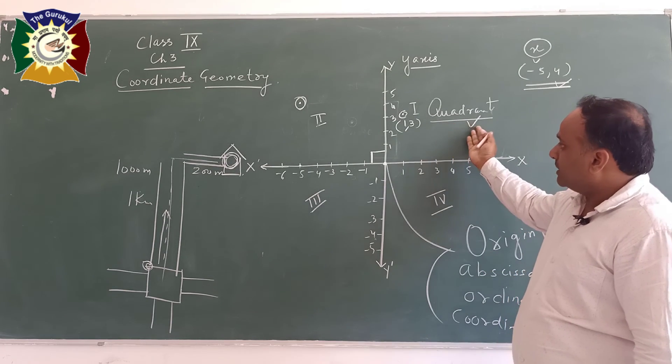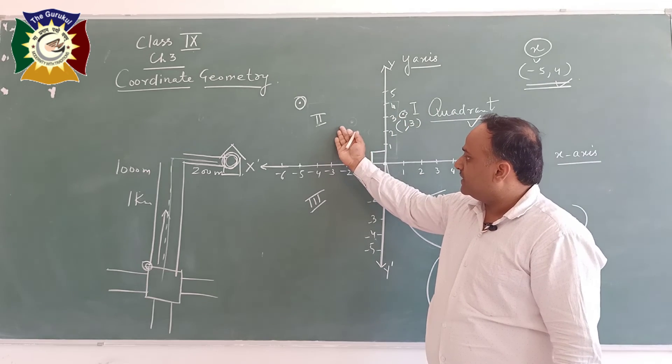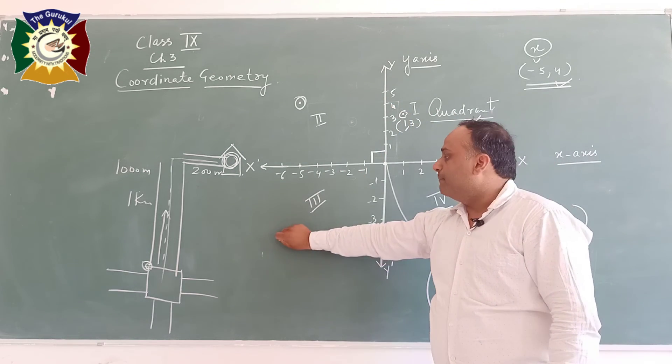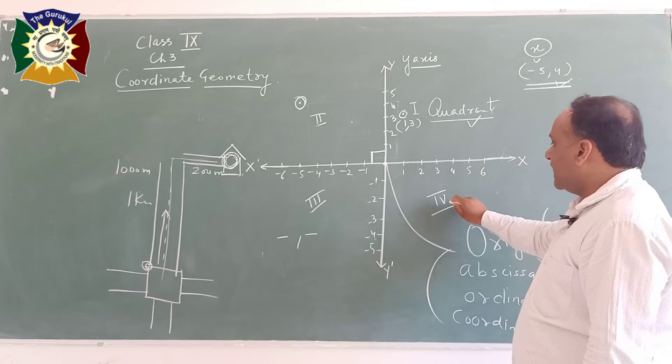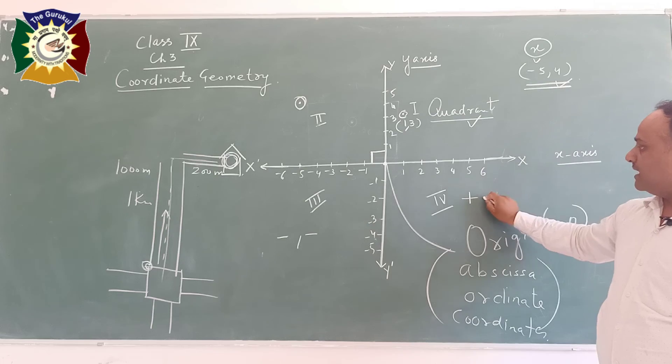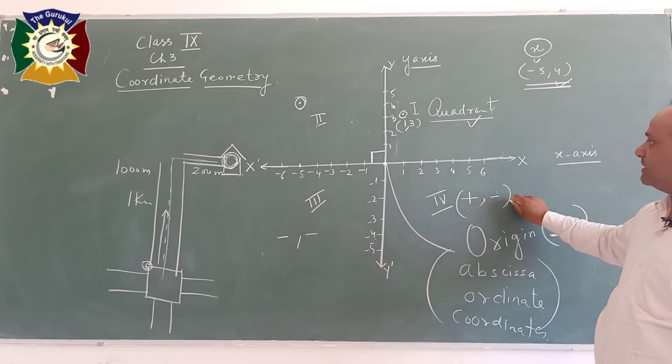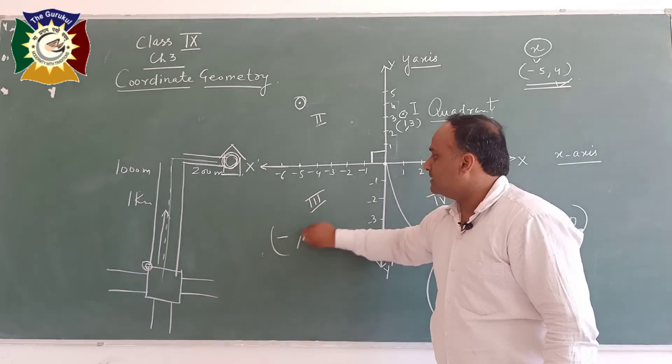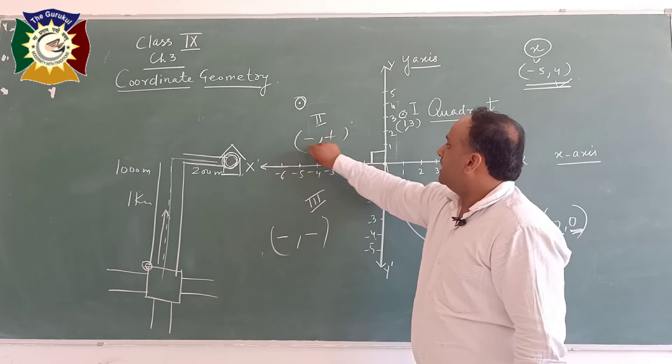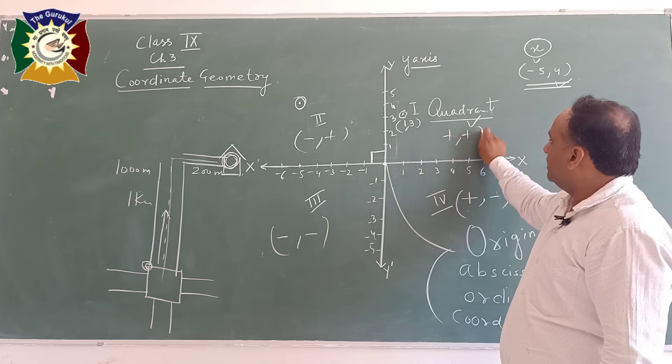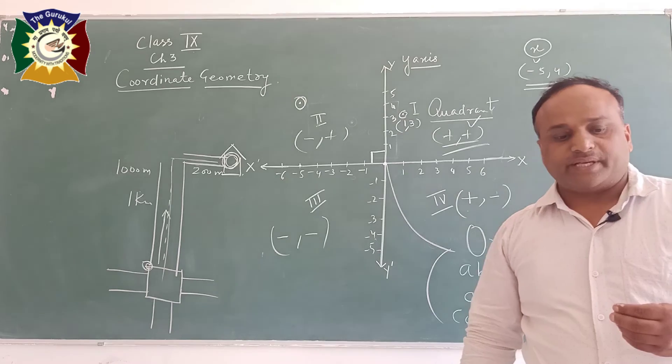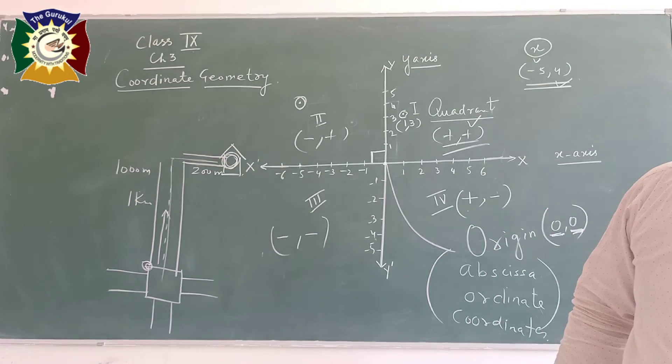In first quadrant, both are positive. In second quadrant, x is negative and y is positive. In third quadrant, both are negative. And in fourth, x is positive and y is negative. So plus-plus, minus-plus, minus-minus, and plus-minus. Simple things to look at the point.